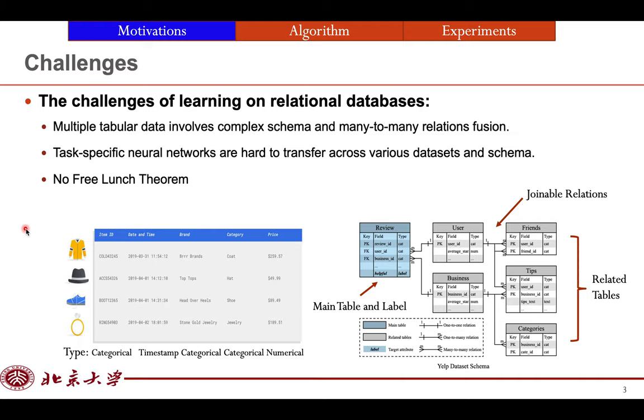The main challenge of learning on relational databases is that multiple tables involve complex schema. As we notice that the mapping cardinality of joinable relation can be one-to-one, one-to-many, and many-to-many. And one table can be extended with other tables' information by joinable relations recursively. So how to fuse the information from related tables is the main challenge.